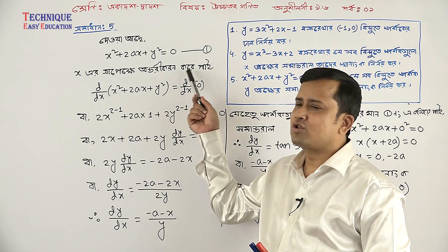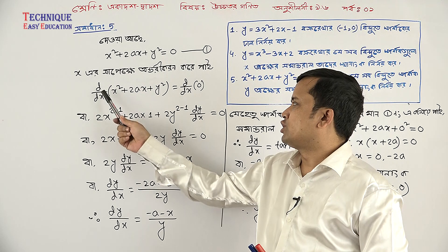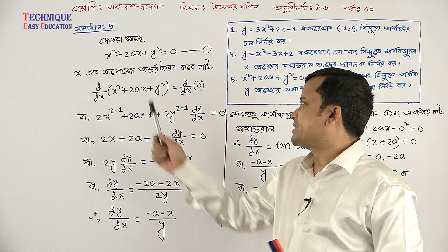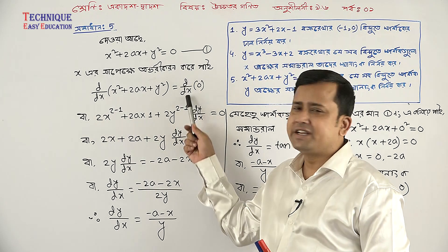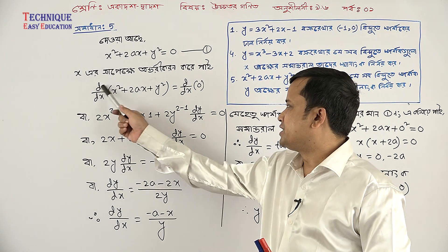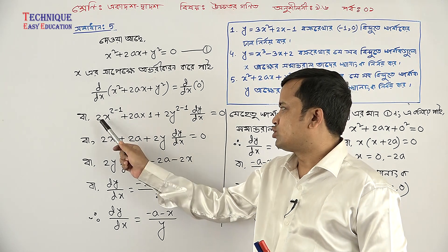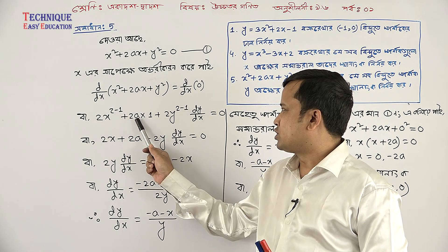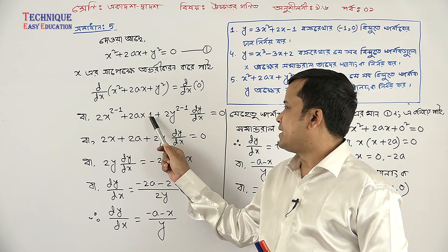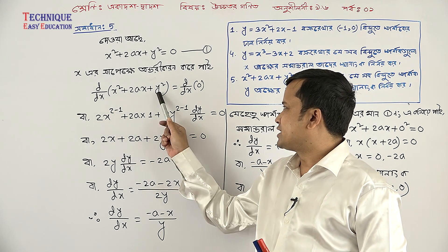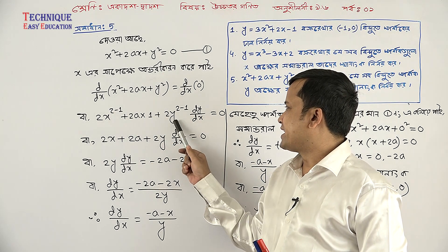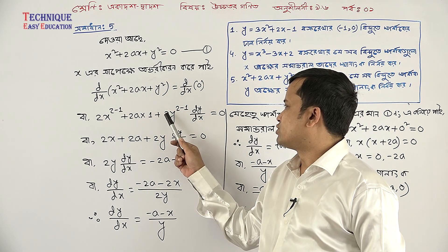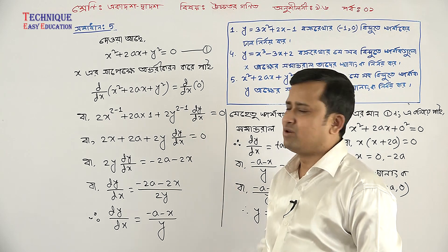n minus 1. d/dx of x to the power n equals x to the power n minus 1.